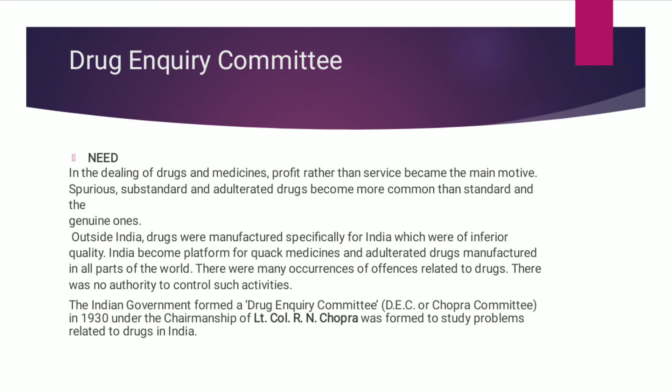Regarding the need for the Drug Enquiry Committee: in the dealing of drugs and medicines, profit rather than service became the main motive, resulting in spurious, substandard and adulterated drugs becoming more common compared to standard and genuine ones. Outside India, drugs were manufactured specially for India which were of inferior quality. India became a platform for quack medicines and adulterated drugs manufactured in all parts of the world — meaning those medicines rejected or not meeting the standards of their respective countries were dumped in India. There was no authority to control such activities.